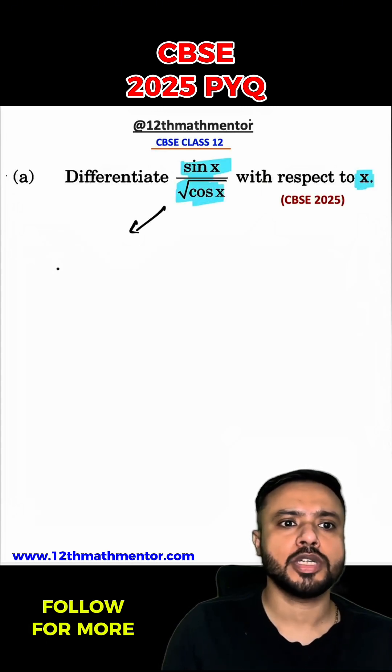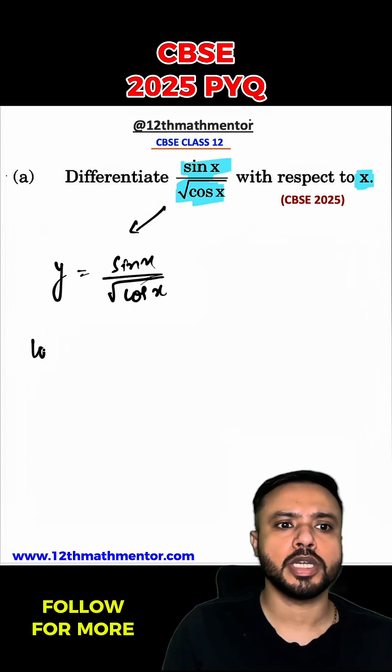So to solve this question, first I'm going to assume y as sin x upon root of cos x. And now I'm going to take log both sides. So I'll say log y equal to log of sin x by root cos x.